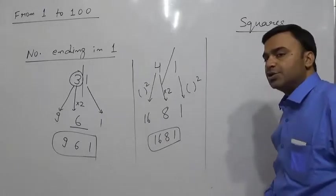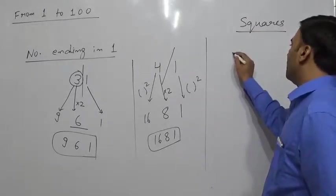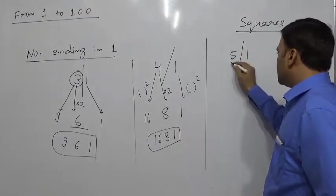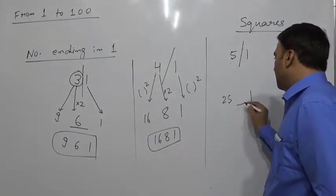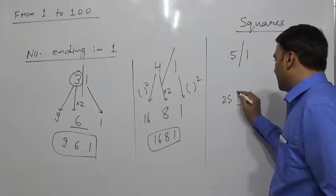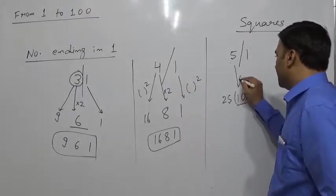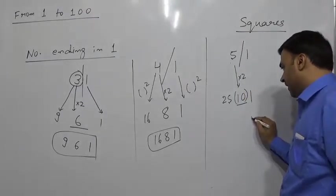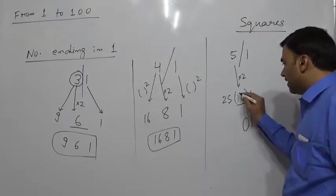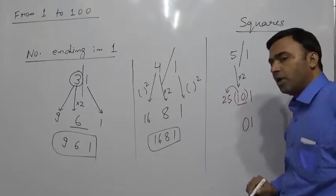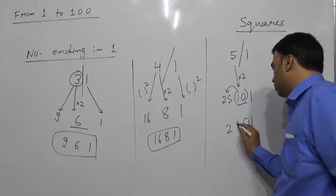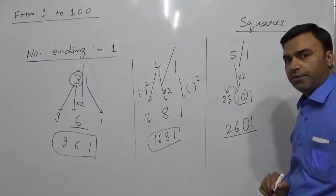Suppose we have to find the square of 51. Separate 1: square of 1 is 1, square of 5 is 25, and in the middle we have 5 × 2 = 10. This is a tricky part — only the units digit 0 comes in the middle, and the 1 carries forward to 25, making it 26. So the square of 51 is 2601.